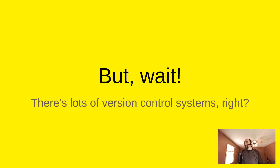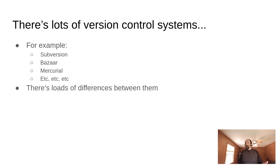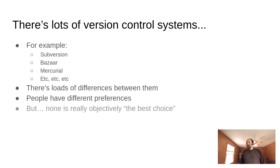But there are lots of version control systems, not just Git. There are loads, for example, Subversion, Bazaar, Mercurial, et cetera. There are loads of differences between them. They all effectively accomplish the same thing at a high level, but at a day-to-day use level they're actually quite different, and people have different preferences. Personally, I actually prefer the Bazaar version control system to Git, but that's just my personal preference. At the end of the day, none is really objectively the best choice — they all have pros and cons — but I think any of them can get the job done.